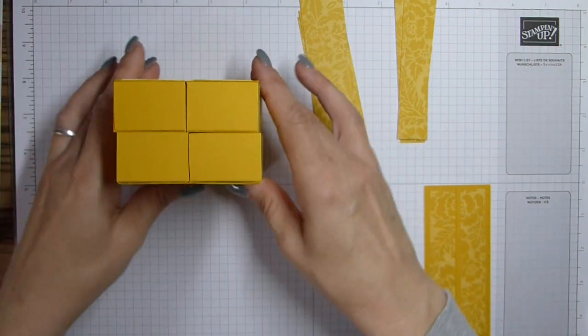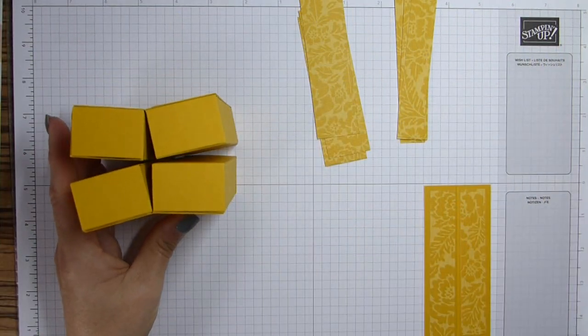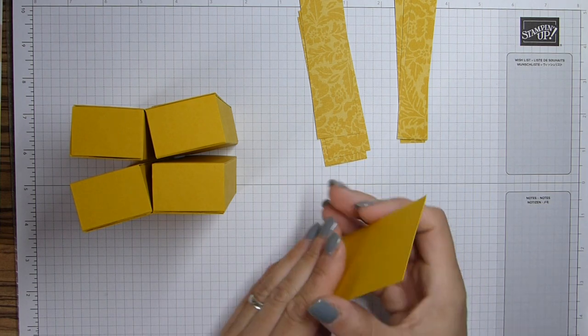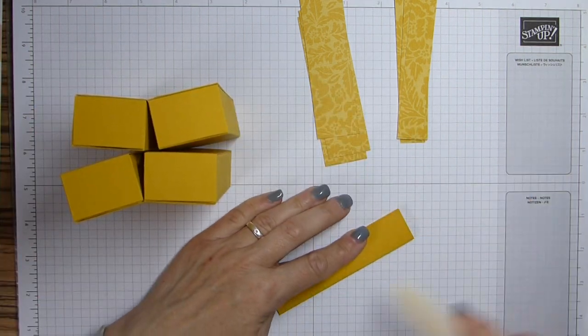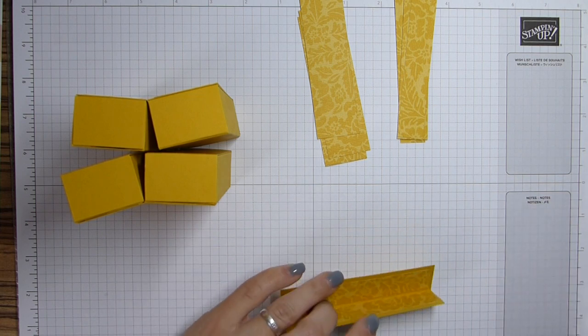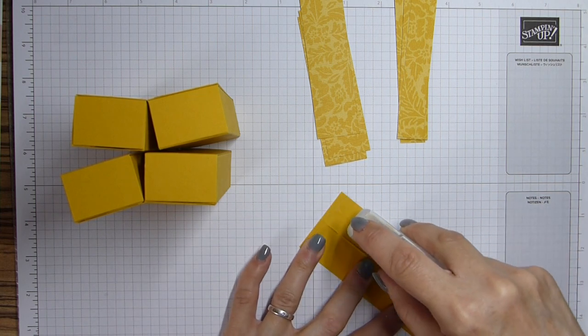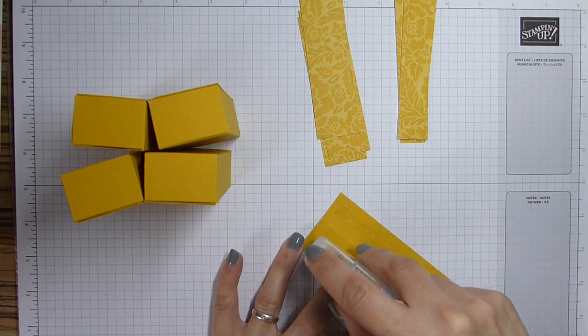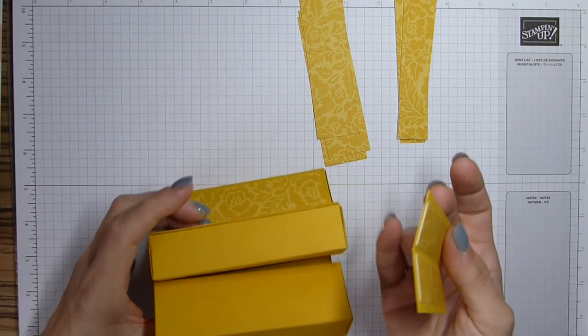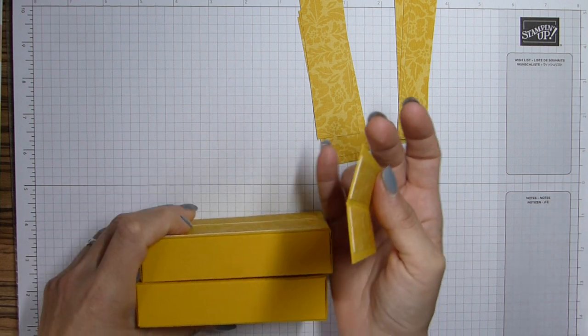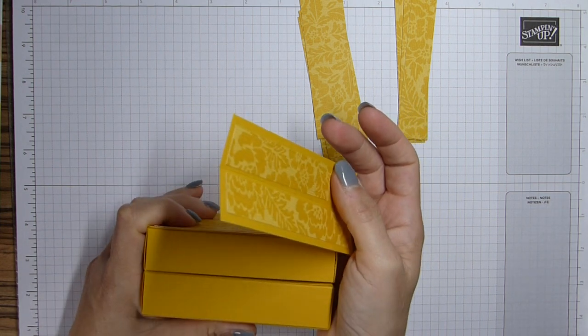So that's those two now together. And then the last one will go on this side here. Again, fold and burnish that bit there. Add my adhesive. That will now go onto this one.